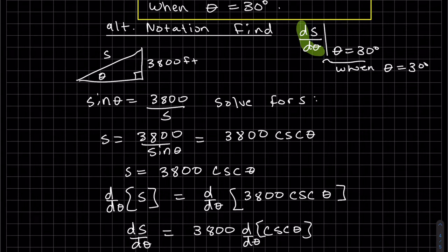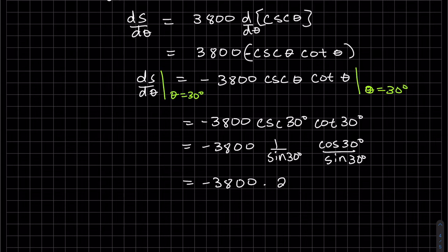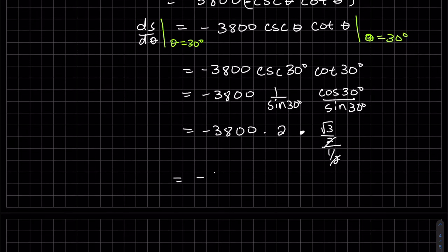So I found the derivative. Now I want to find the derivative evaluated at theta equals 30. When theta is equal to 30. We just add that notation right here. At theta equals 30. At theta equals 30. It's 1 divided by 1 half, which is 2. Square root of 3 halves all over 1 half. So 2's cancel. So what are the units? The units are the units of this rate.